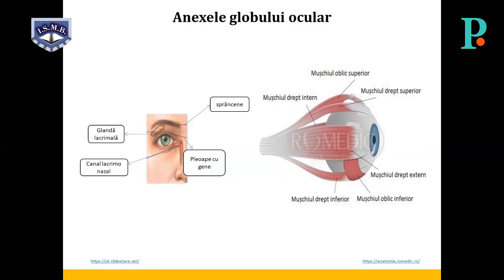Sprâncenele împiedică transpirația să ajungă în ochi. Ploapele, superioară și inferioară, sunt două pliuri tegumentare; pe marginile lor se află genele ce rețin particulele de praf. Organe de mișcare: cei șase mușchi externi — patru drepți și doi oblici ai globului ocular — se inseră cu un capăt pe sclerotică și cu celălalt capăt pe orbită, asigurând mișcările sus-jos, de lateralitate și de rotație.